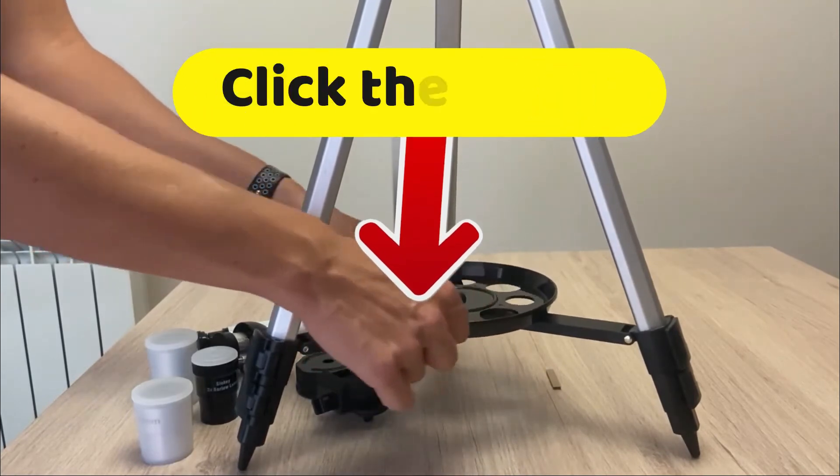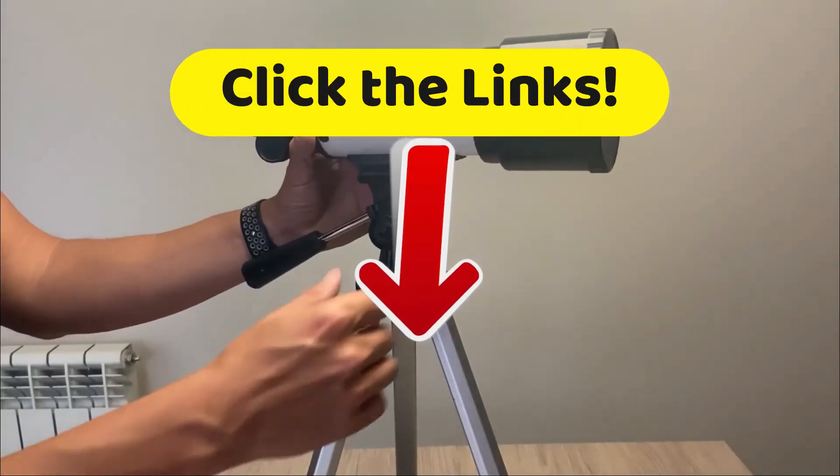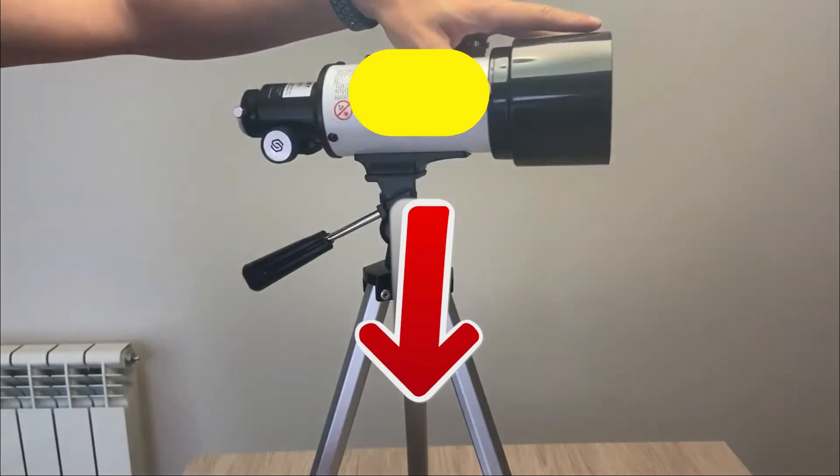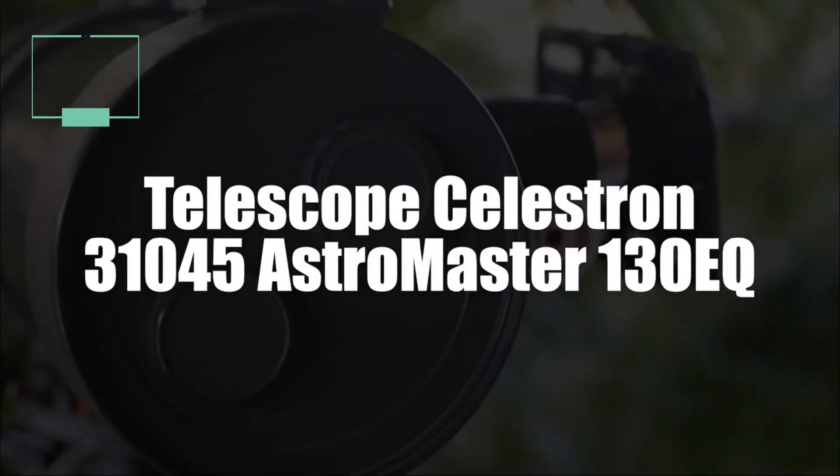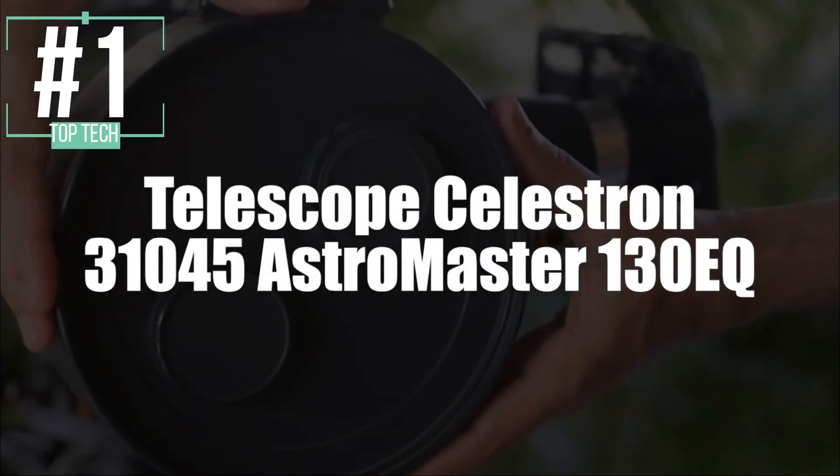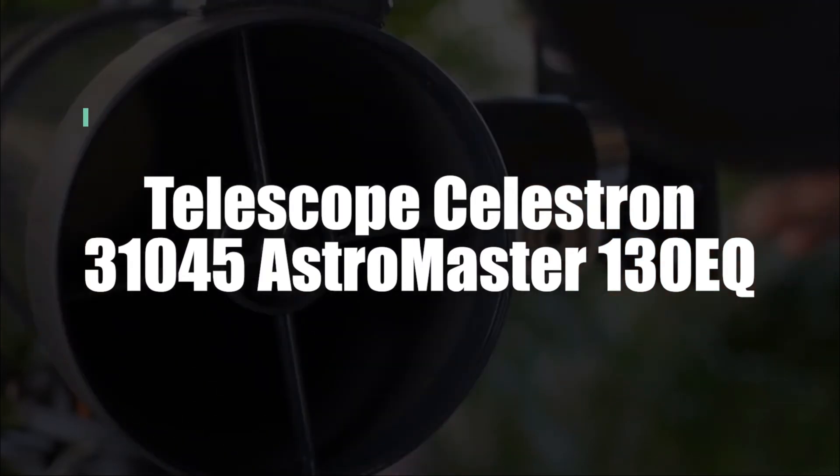And I remind you that to get the best discounts that we have found just for you on the internet, click on the links in the description of this video below. And now, taking first place, we have selected the Celestron Telescope Model 31045 by Astromaster.